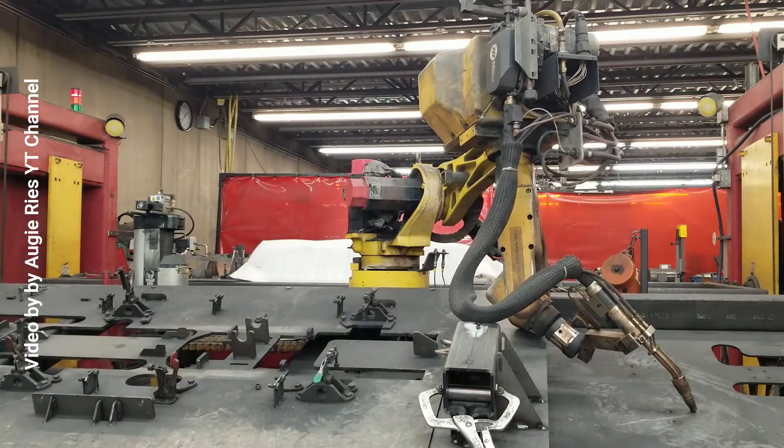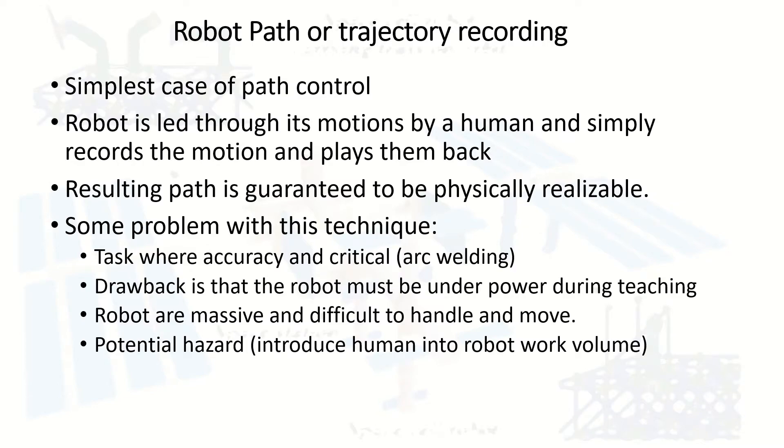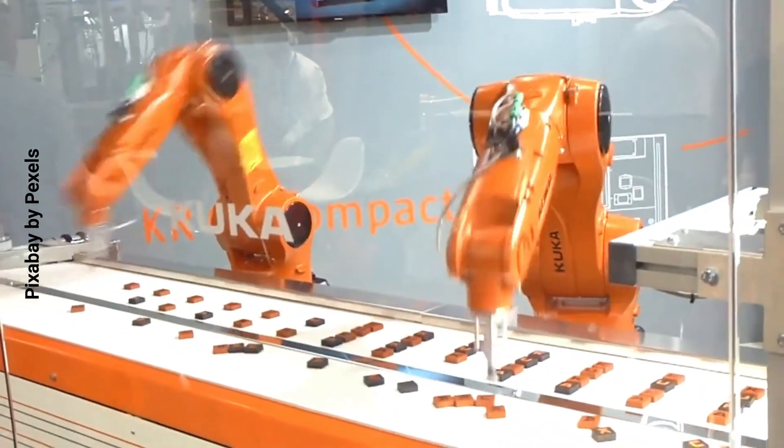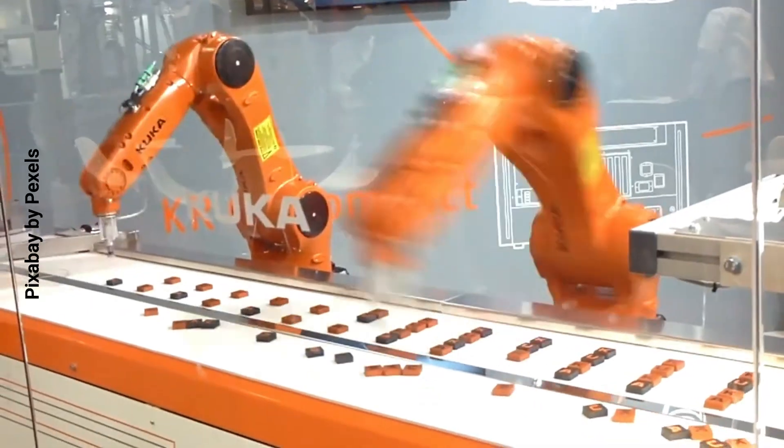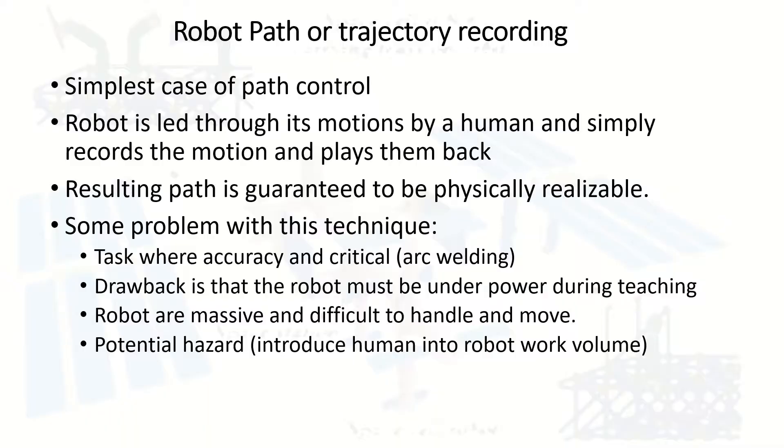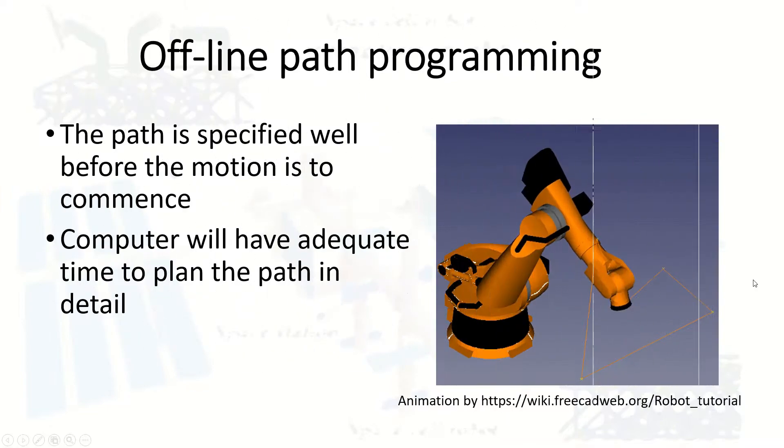When it comes to accidents or unknown situations, this kind of program cannot react to the sudden situation. This is the difficulty or problem faced by using the recording trajectory programming methods.